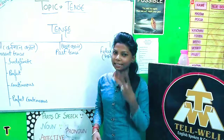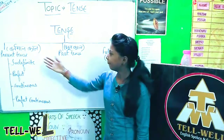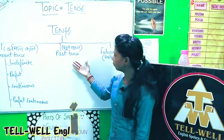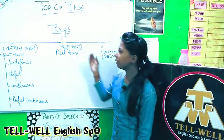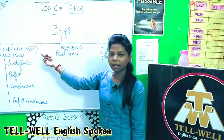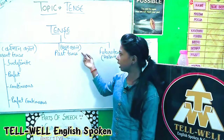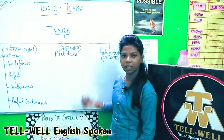There are three types of tense: present tense, past tense, future tense. Present tense means Bharatamankal, past tense means Bhutkal, and future tense means Bhavishyakal.